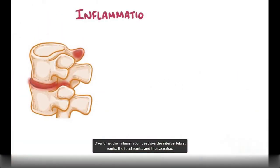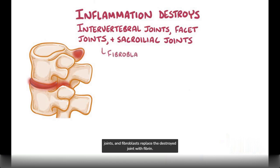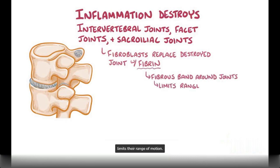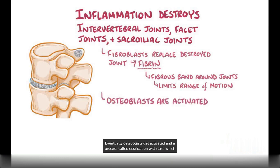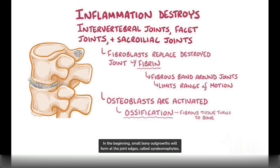Over time, the inflammation destroys the intervertebral joints, as well as the facet joints and the sacroiliac joints, and fibroblasts replace the destroyed joint with fibrin. Layers and layers of fibrin form a tough fibrous band around the outside of the joints, which limits their range of motion. Eventually, osteoblasts get activated, and a process called ossification will start, which is when the fibrous tissue turns to bone. In the beginning, small bony outgrowths will form at the joint edges, called syndesmophytes.